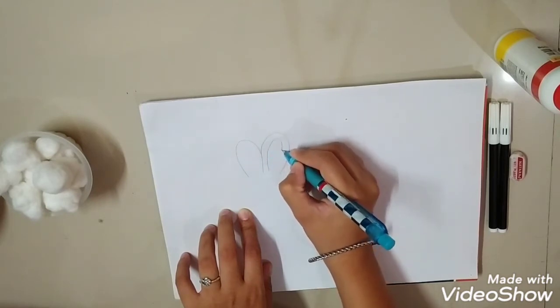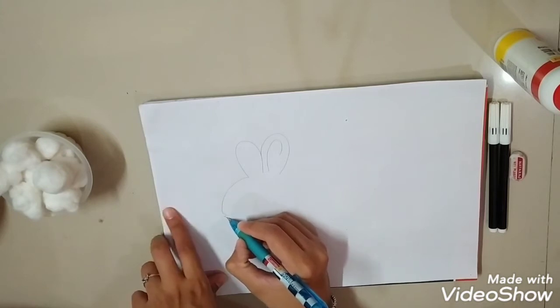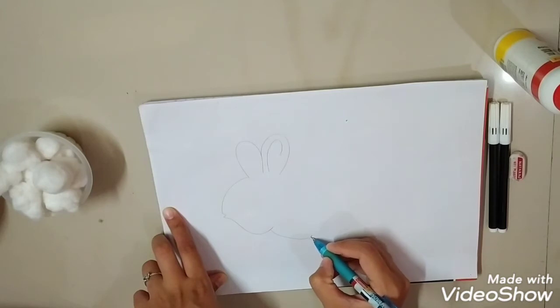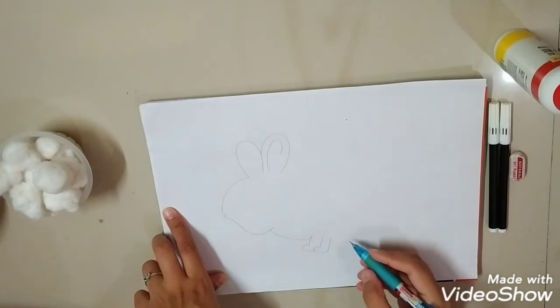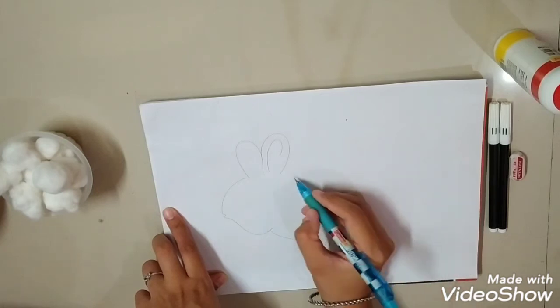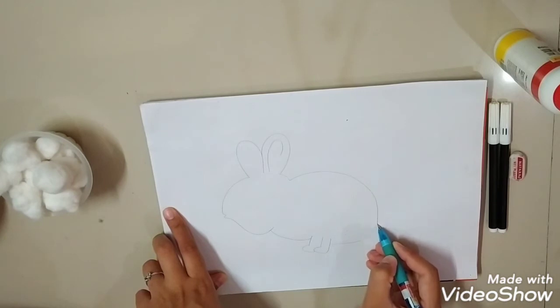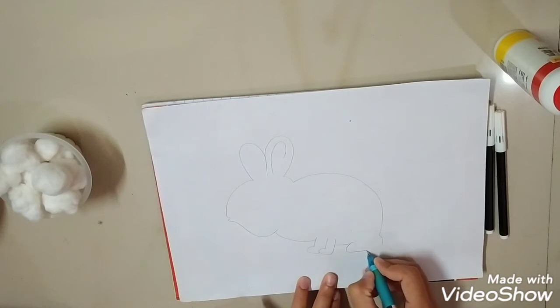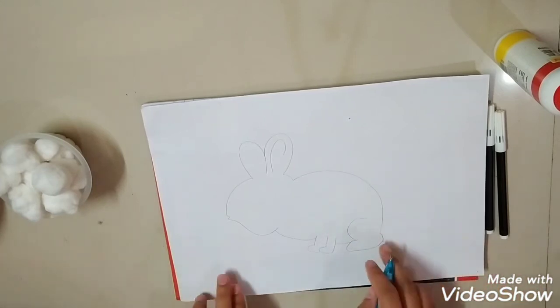It is its ears. Now I will draw its mouth. Its legs. Its body. So see, I have drawn rabbit.